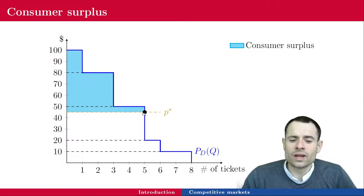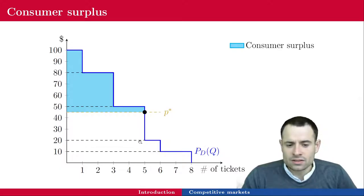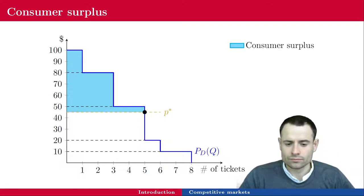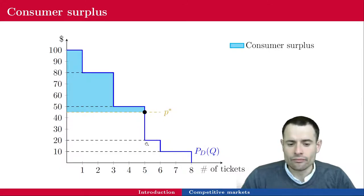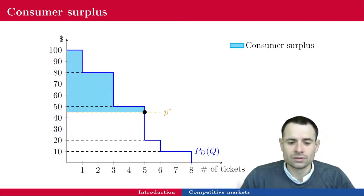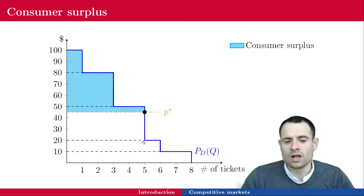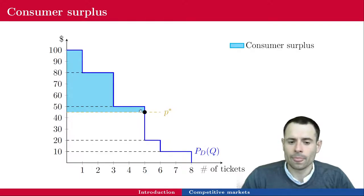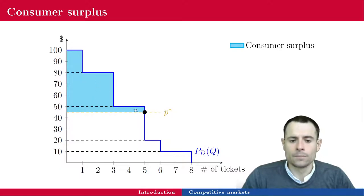Why don't they buy more than five units? Because the demand at five units represents the willingness to pay for the sixth unit of the good. Consumers are willing to pay $20 for a sixth ticket, but the price is equal to $45 — so this would represent a loss in utility. So they stick to five tickets, willing to pay $50 for the last one. Adding up all the surpluses for each unit, you get this blue area.